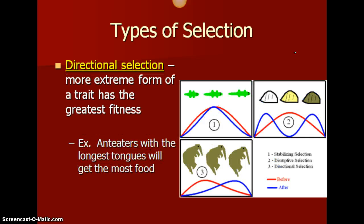Our third type is directional selection. With directional selection, more extreme forms of the trait have the greatest fitness. We're looking at the extreme shown here in blue, where maybe before, the extreme shown in red was better suited. As an example, anteaters with the longest tongues get the most food.